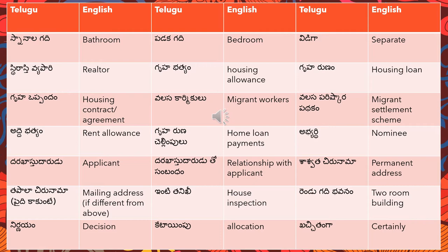The next word is 'sthirasthi vyapari', which means realtor. There is a variation in this word — 'sthirasthi vyapari' can also mean real estate.